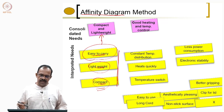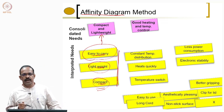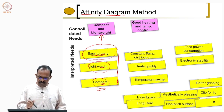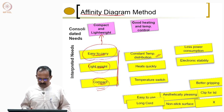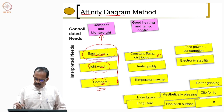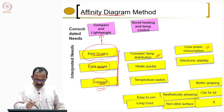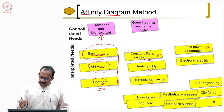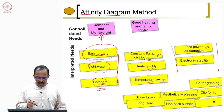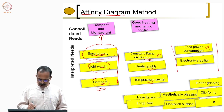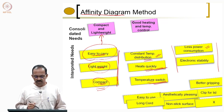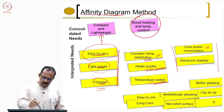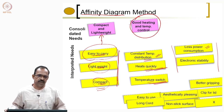You take the next positive pad and try to find out what is the interpreted need in that one. For example, you take 'constant temperature,' something on constant temperature distribution, and then you see something on less power consumption. Since they are not the same kind of thing, we will try to separate them into different ones. You arrange all those positive pads depending on the category and identify all those categories. For example, 'constant temperature distribution,' 'heats quickly,' and 'temperature switch' — these are all talking about a requirement of good heating and temperature control needed for the product.